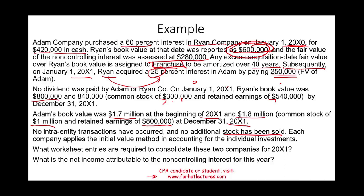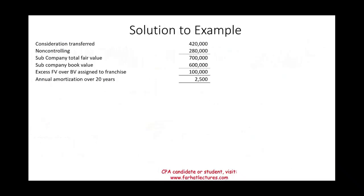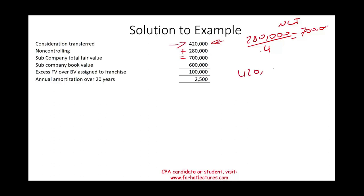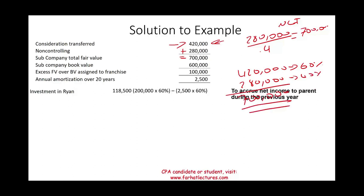First, we figure out the annual excess amortization. The consideration transferred was $420,000, and with the NCI of $280,000 the total fair value is $700,000. Book value was $600,000, giving excess fair value of $100,000 assigned to the franchise, amortized over 40 years. $100,000 divided by 40 years equals $2,500 of excess amortization per year.